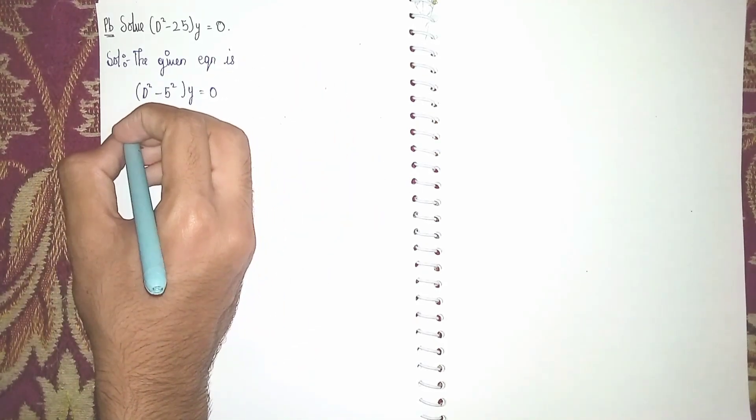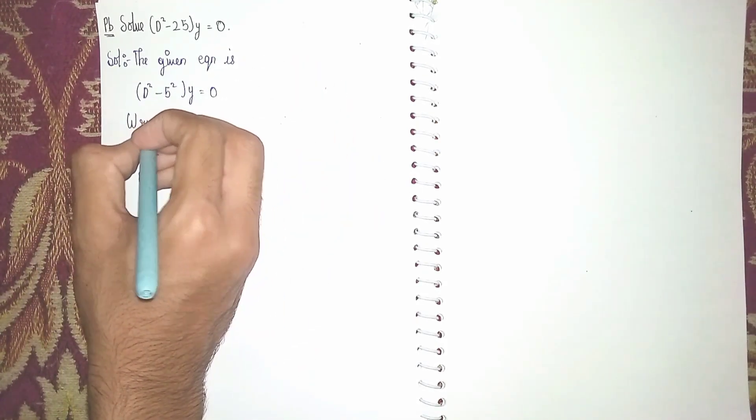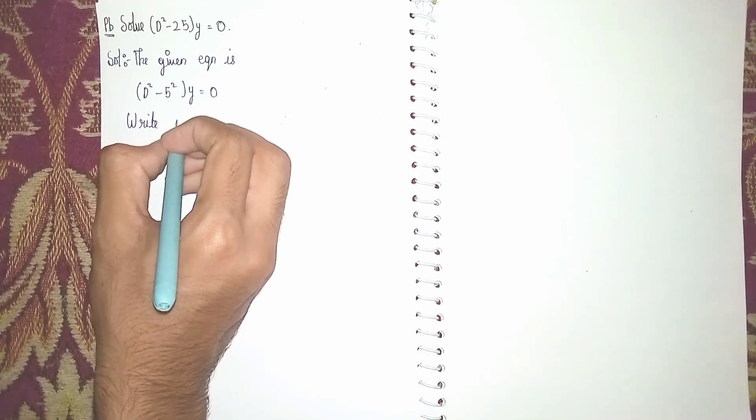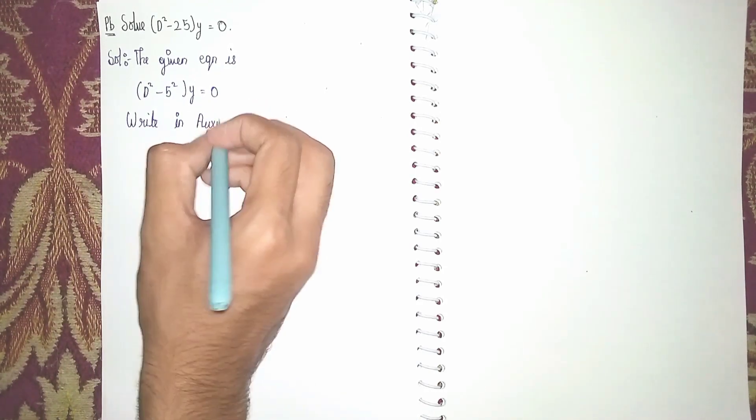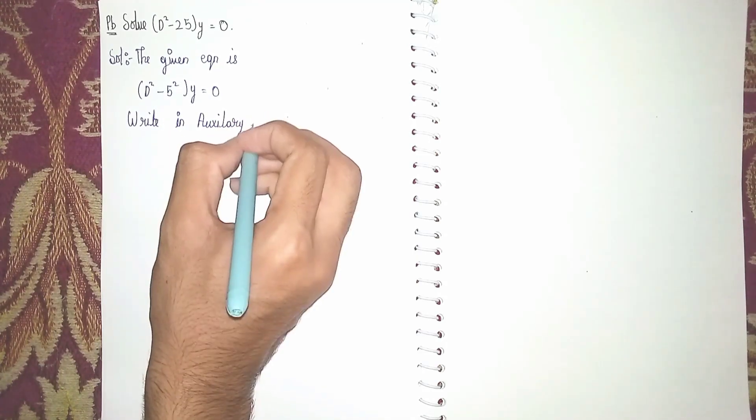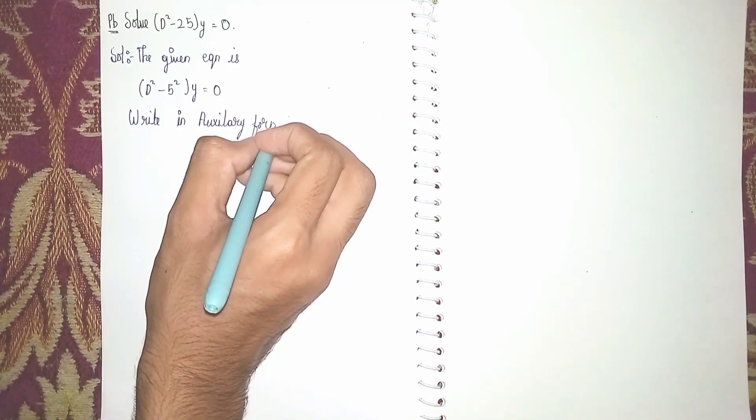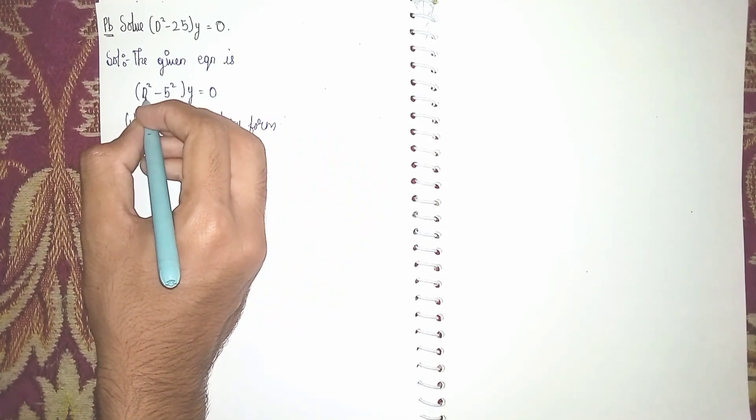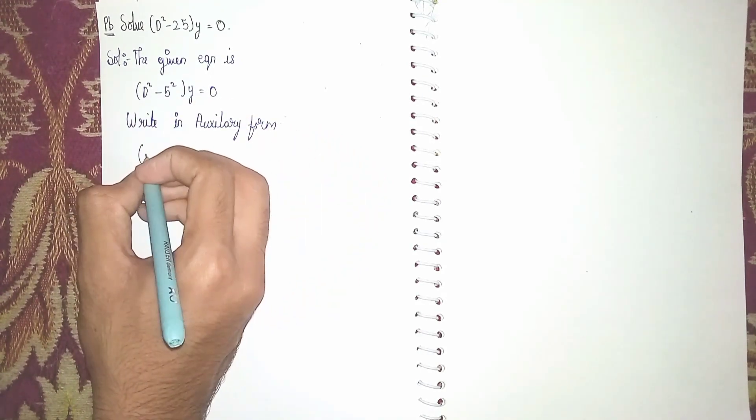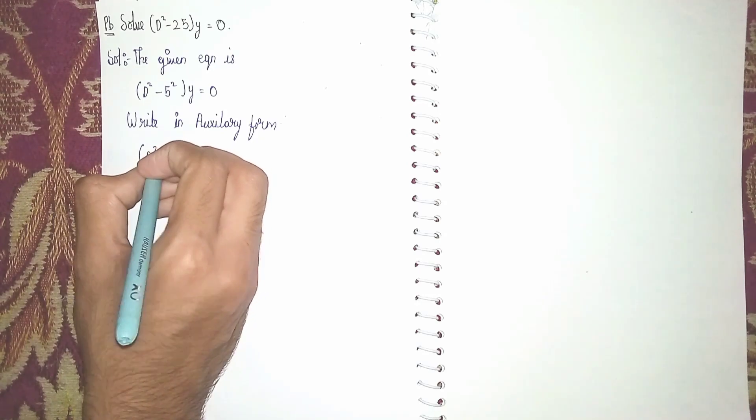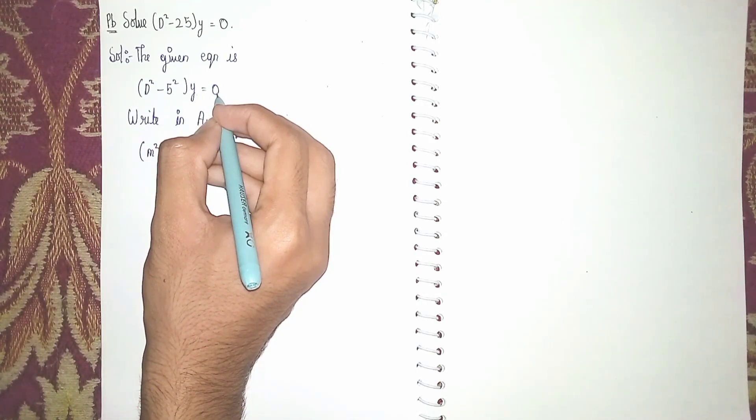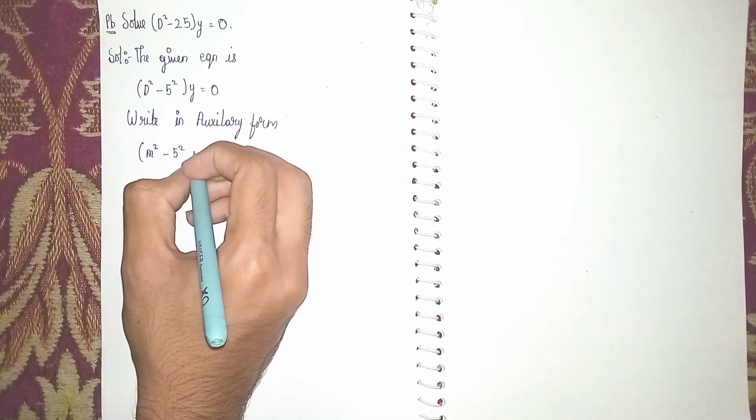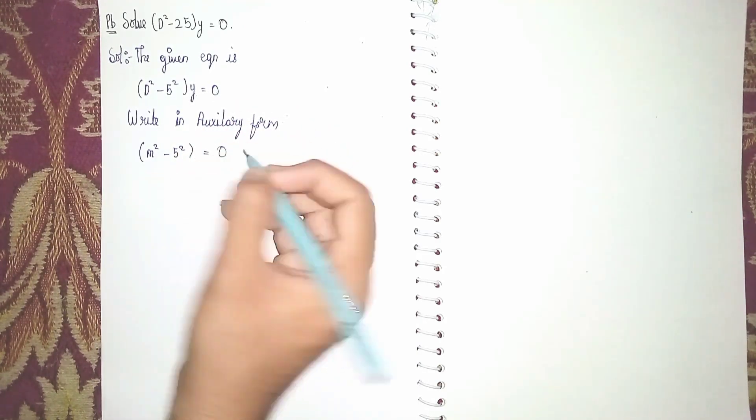Then write in auxiliary form. Auxiliary form means instead of d we write m, so it becomes m square minus 5 square into y is equal to 0. So m square minus 5 square is equal to 0.